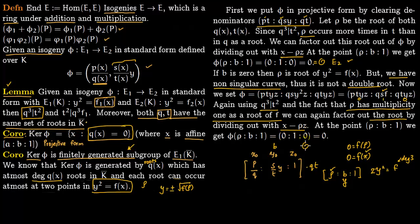We have now shown that if rho is a root of Q(X), then we get a point in the kernel, and the kernel is of the form (a : b : 1) where a equals rho. This completes the proof.